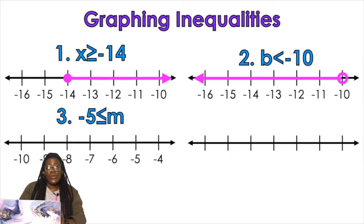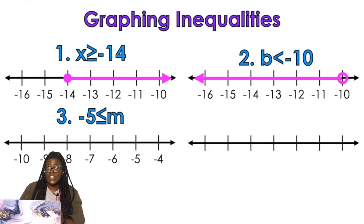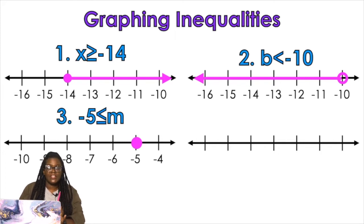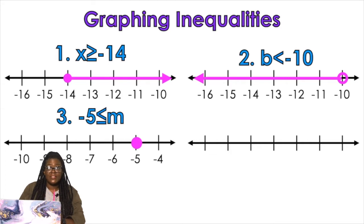So we're going to find negative five on the number line and decide what symbol — open or closed. Did you say closed? Very good. Now the direction: when the variable is on the other side, you want to do the opposite of what it looks like you should do. So this looks like a less than, but it's actually greater than because it's flipped. So we should shade to the right.